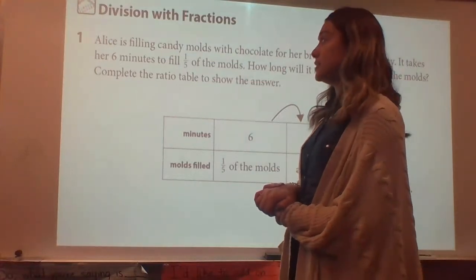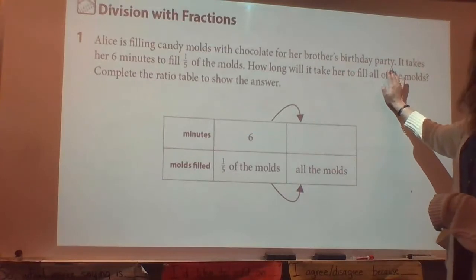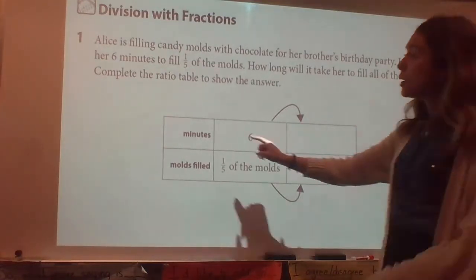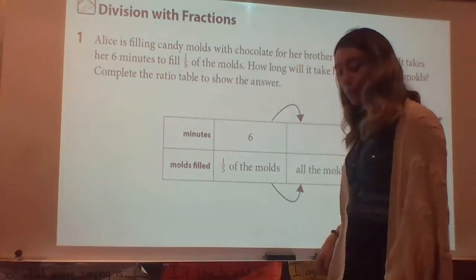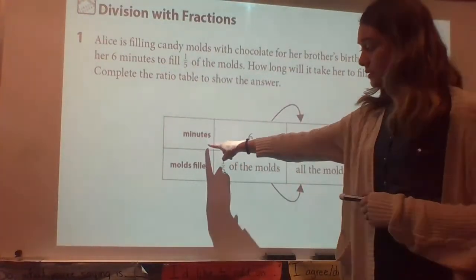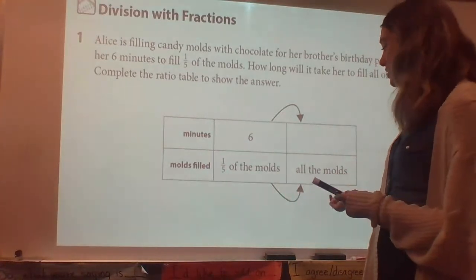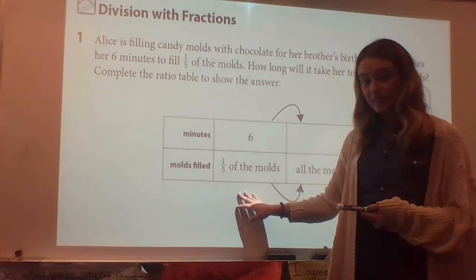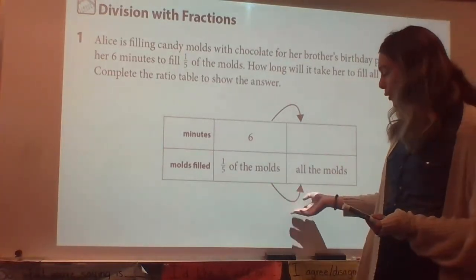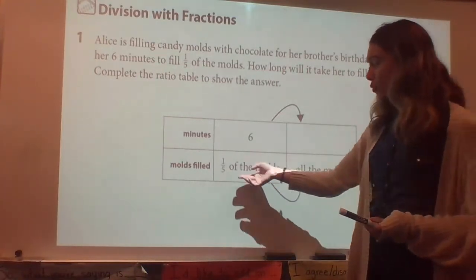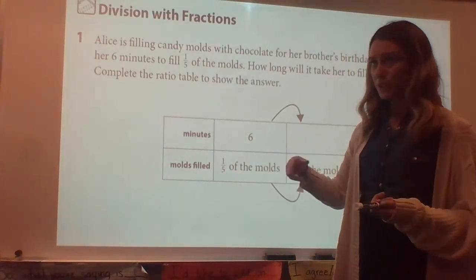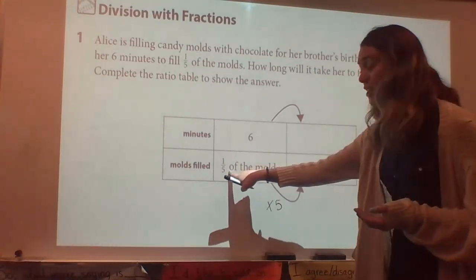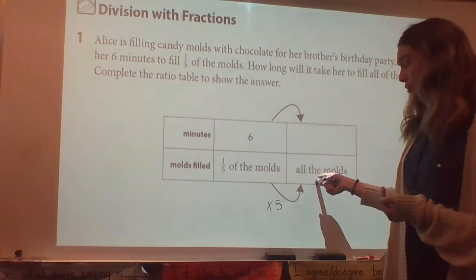Number one says: Alice is filling candy molds with chocolate for her brother's birthday party. It takes her six minutes to fill one fifth of the molds. How long will it take her to fill all of the molds? Complete the ratio table to show the answer. We know it takes her six minutes to fill one fifth of the molds. I have to think: how many fifths will it take to get to all of the molds? She would have to fill five fifths to get all of the molds. So I'm going to multiply by five, because five times one fifth gets us to five fifths, which is all of the molds.